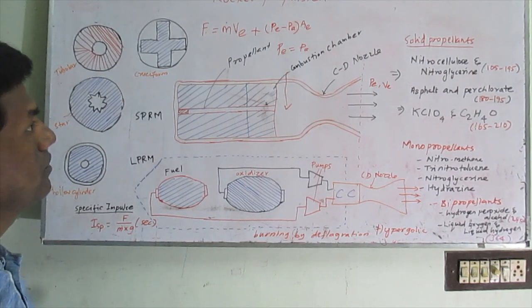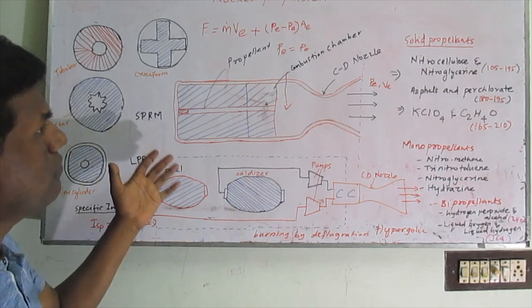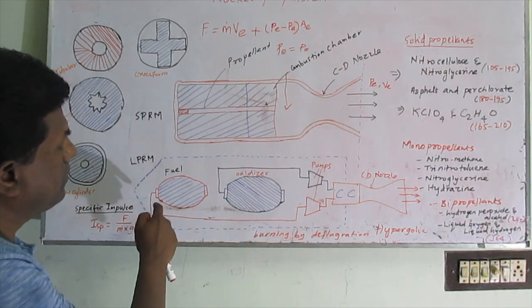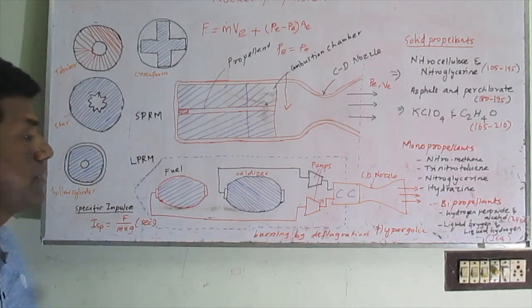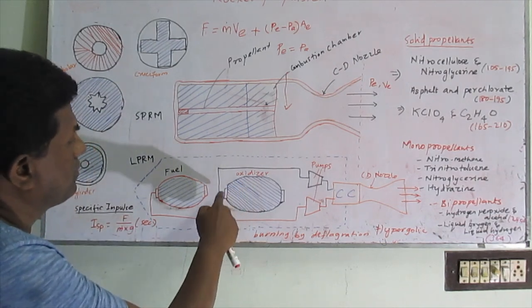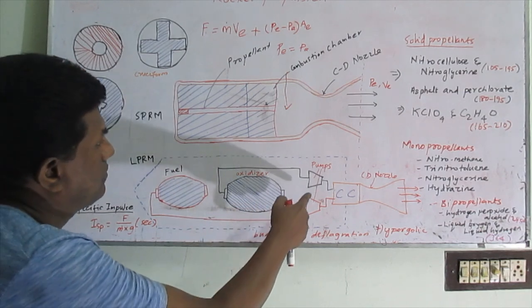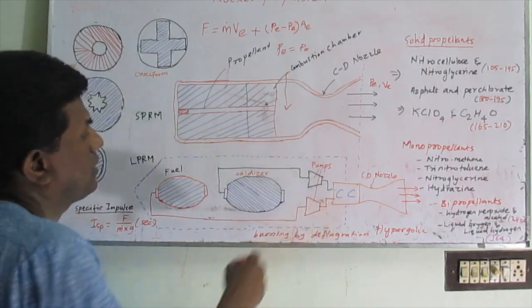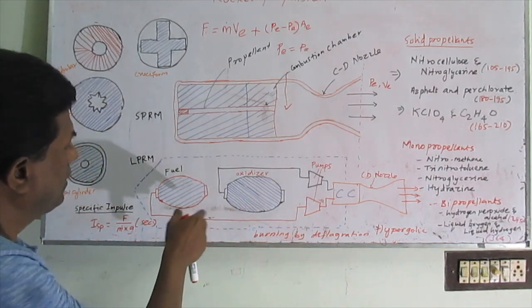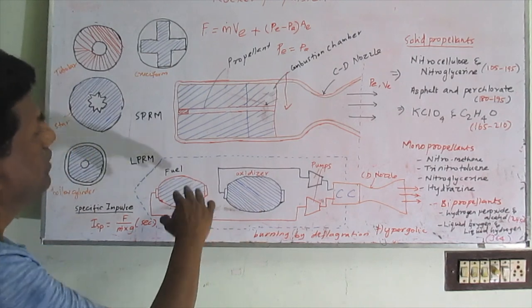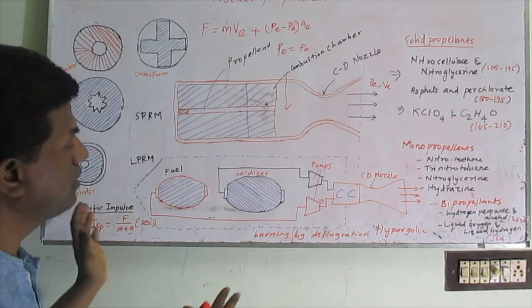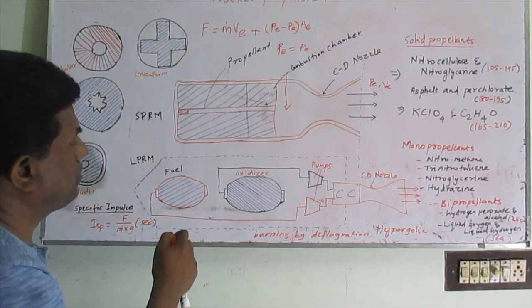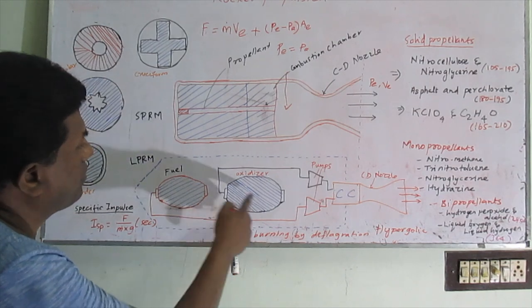Now we will see about liquid propellant rocket motors. In liquid propellant rocket motors, the fuel and oxidizer are stored separately. The combustion chamber, nozzles, and igniter are present. The key difference from solid propellant motors is that fuel and oxidizer are stored separately, whereas in solid propellant motors they are bound together using a binder.